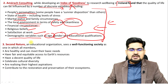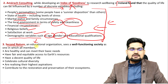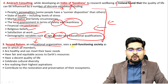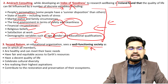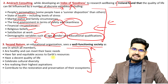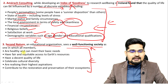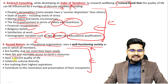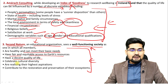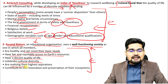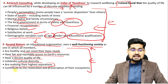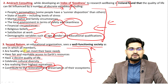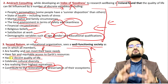Second Nature, an educational organization, made another important measurement, stating that a well-functioning society has these indicators: people are healthy and can meet their basic needs, have fair and equitable access to earth's resources, have a decent quality of life, celebrate cultural diversity, are realizing their highest aspirations, and contribute to the restoration and preservation of their ecosystems.